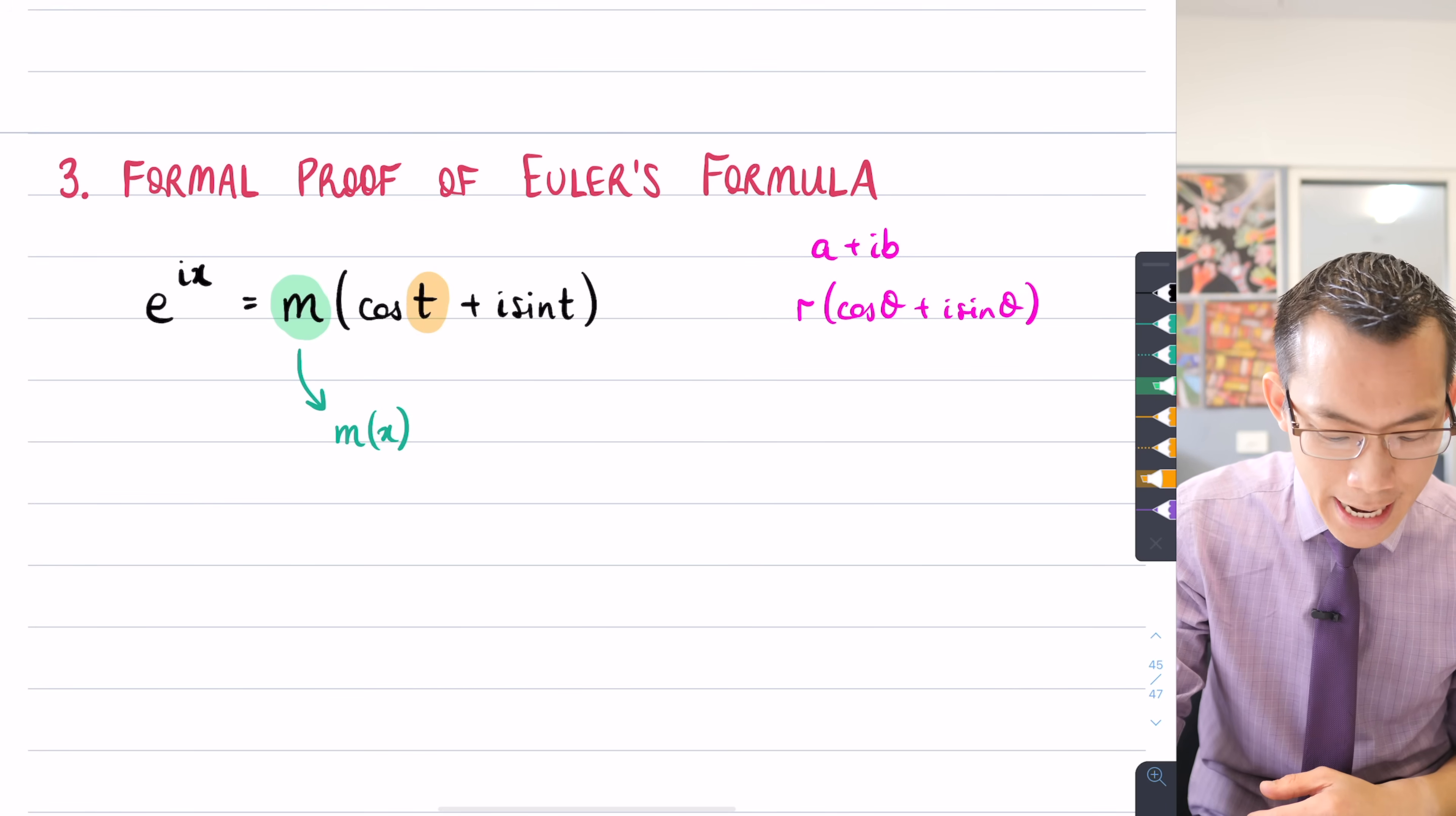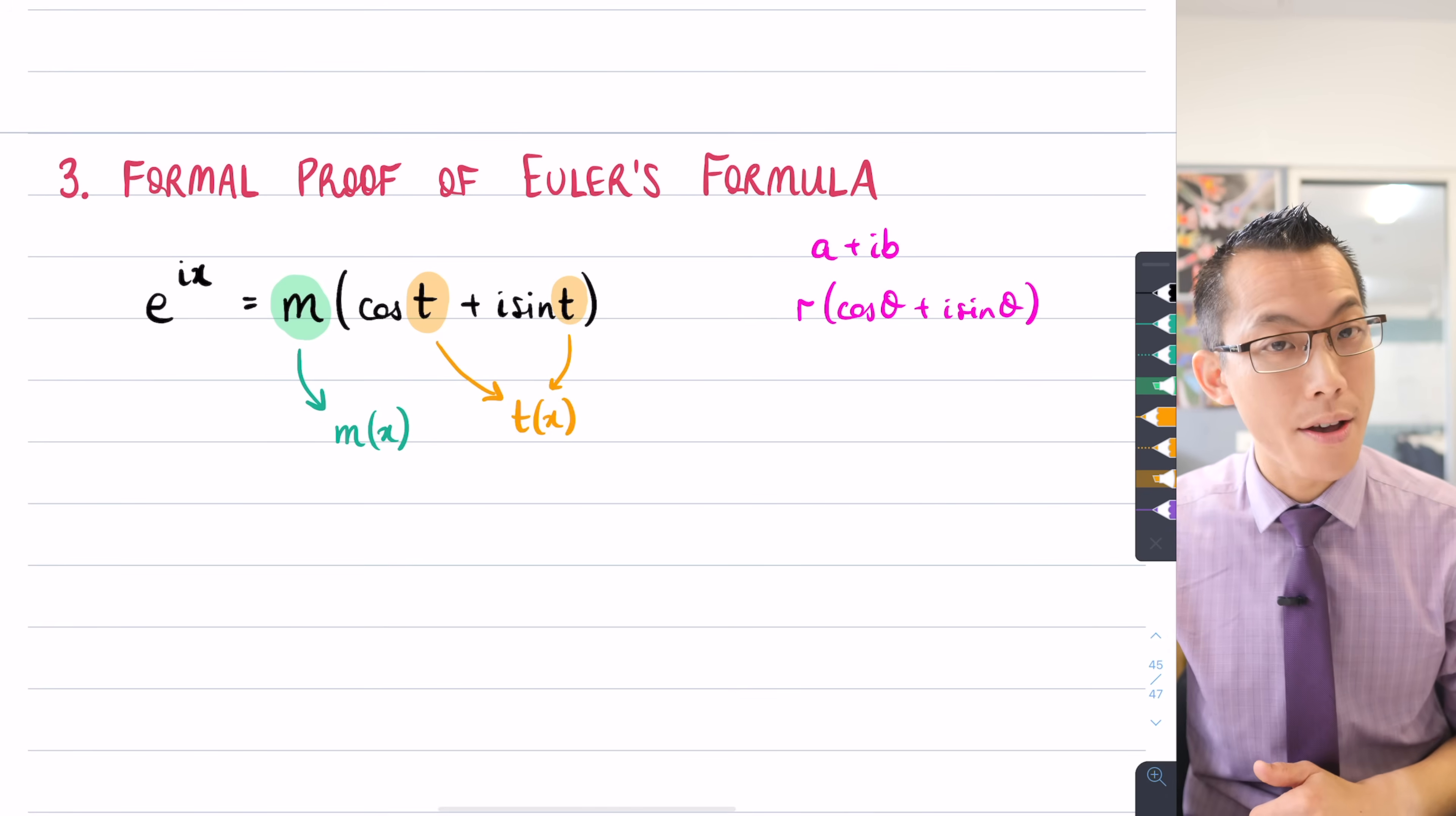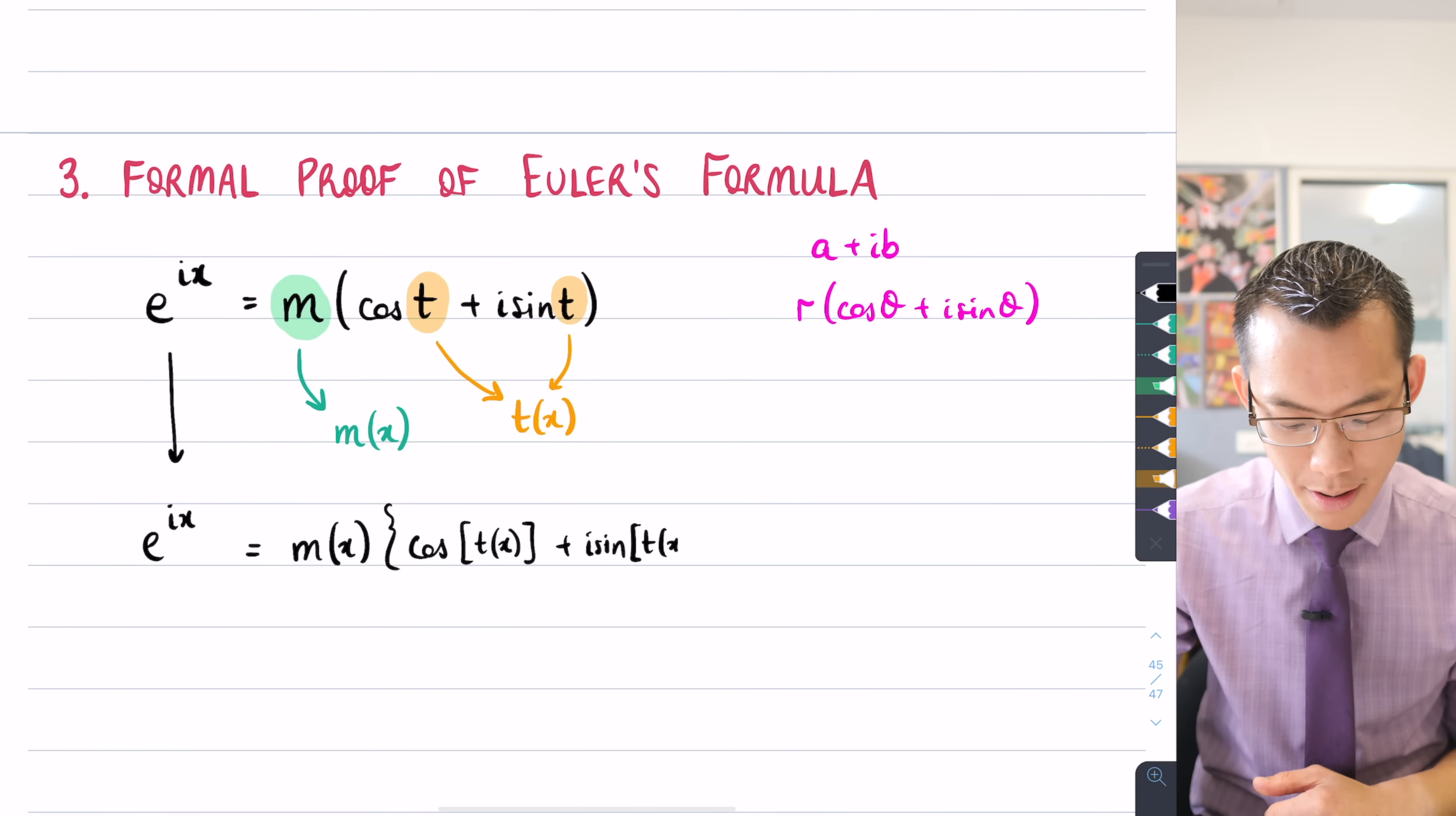And it's going to be the same deal for t. Because if I change what this value is, then I'm going to change the complex number that I get on the right-hand side, so the argument will change as well. So when you see me writing t, what I actually mean is t as a function of x. So these guys here are shorthand for t of x. So a long way to write it is to say, if I've got e to the ix, it equals m of x multiplied by cos of t of x plus i sine of t of x.